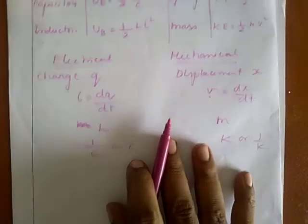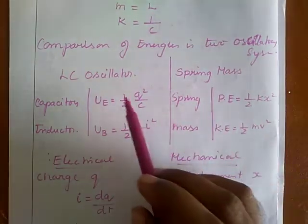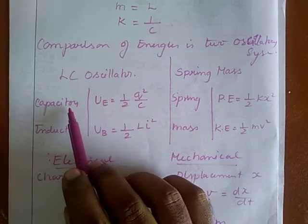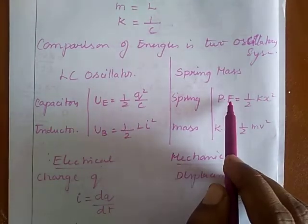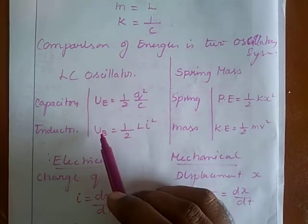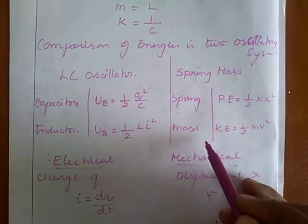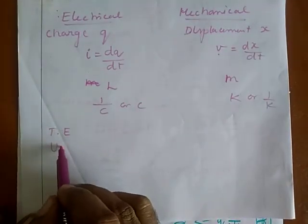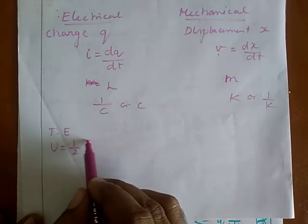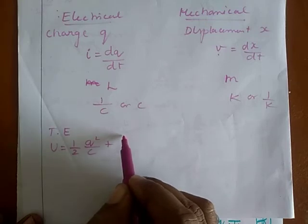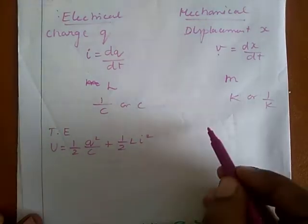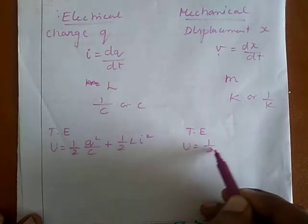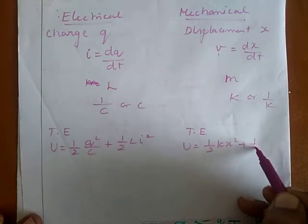The electrical energy — that is, the energy stored in the capacitor — equals the potential energy of the spring. The magnetic energy stored in the inductor equals the kinetic energy of the mass. The total energy for the electrical system is U = ½Q²/C + ½LI², and for the mechanical system it is U = ½Kx² + ½Mv².